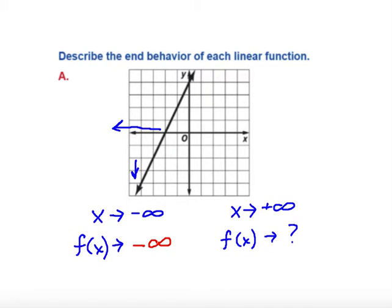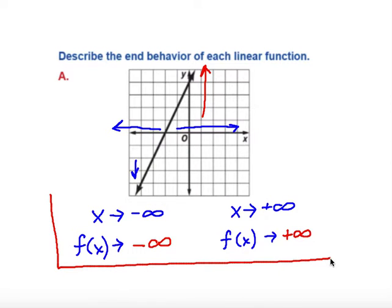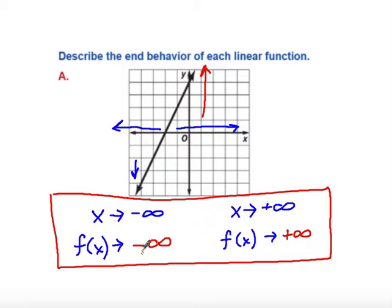Now let's look at the right-hand side of the graph. As I look to the right — it shoots up pretty fast — as we go to the right or towards positive infinity, the function is approaching upward, so it's going towards positive infinity. This is our end behavior of this linear function: as I go to the left, we're going down; as I go to the right, we're going up.